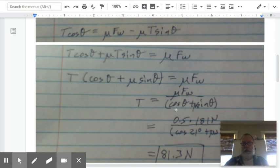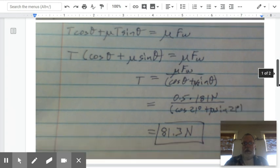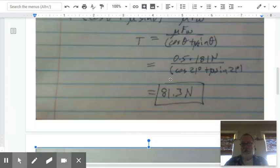And I end up with this equation here, mu times weight divided by cosine theta plus, it's kind of hard to read, but mu K sine theta. And then I plug the numbers in, 0.5 times 181 newtons divided by, in parentheses, cosine 21 plus 0.5. Again, that says mu. It's 0.5 sine 21. And I end up getting 81.3 newtons.